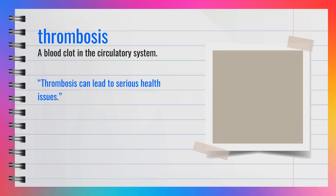The word thrombosis, spelled T-H-R-O-M-B-O-S-I-S, is a noun. Thrombosis refers to a blood clot in the circulatory system. For example, thrombosis can lead to serious health issues. In summary, thrombosis means a blood clot.